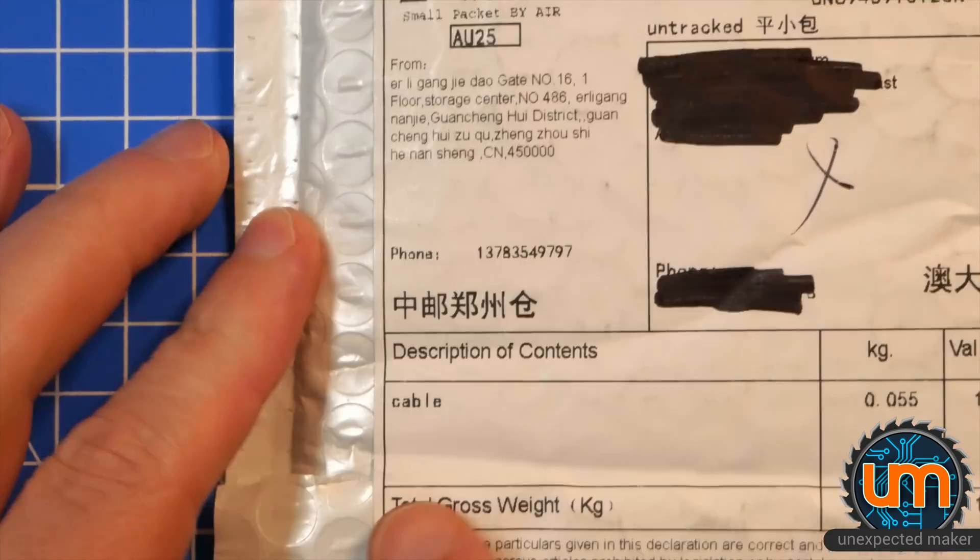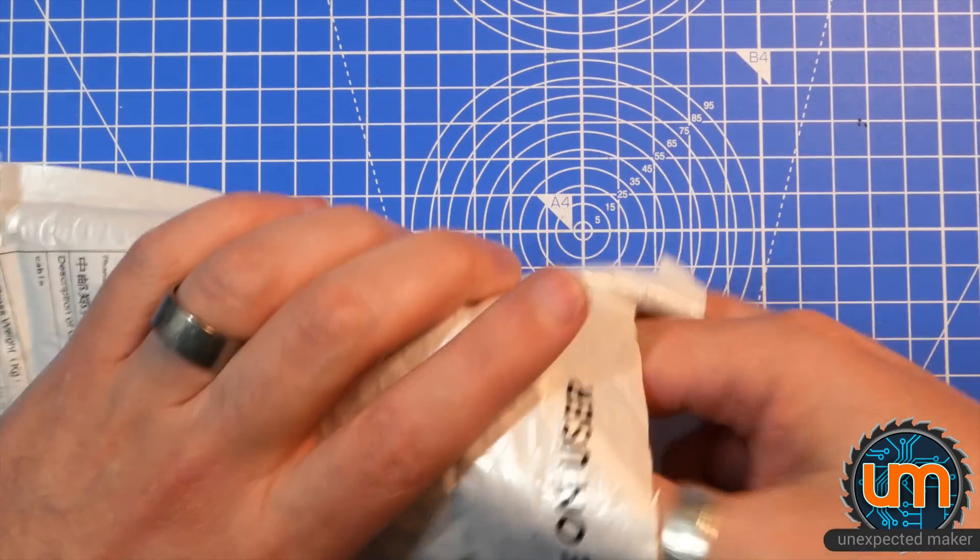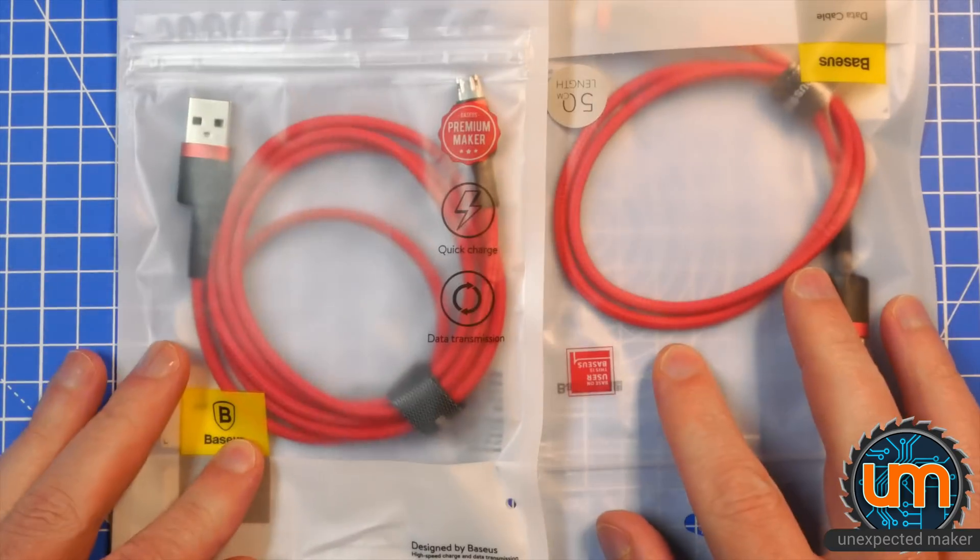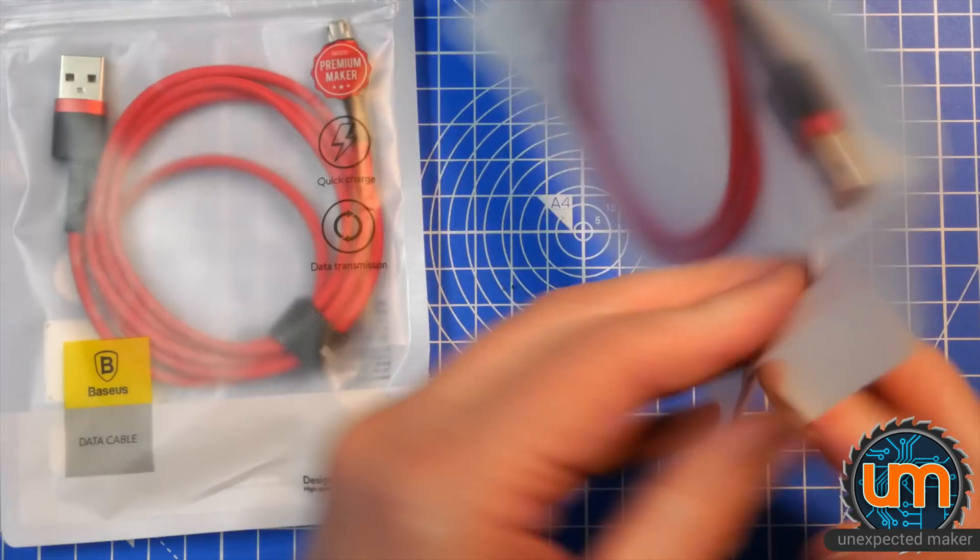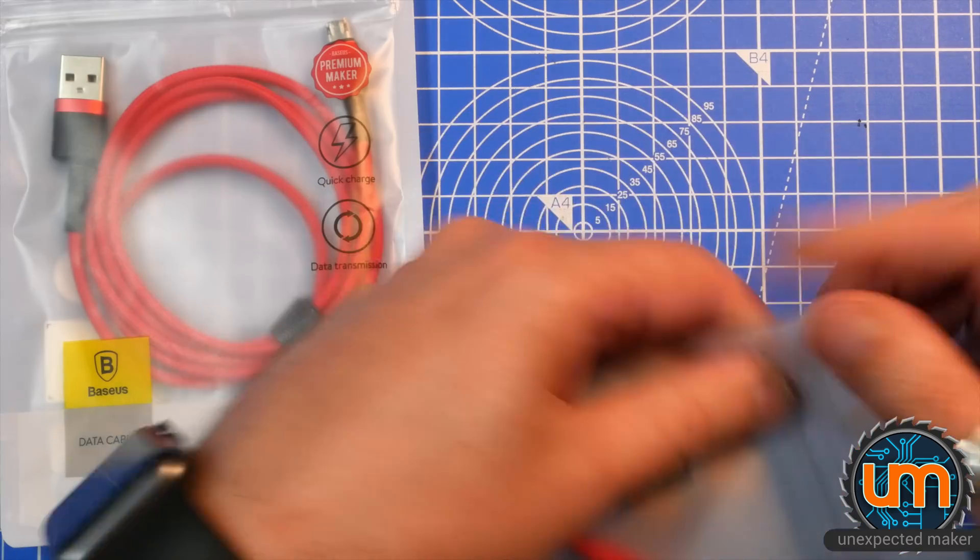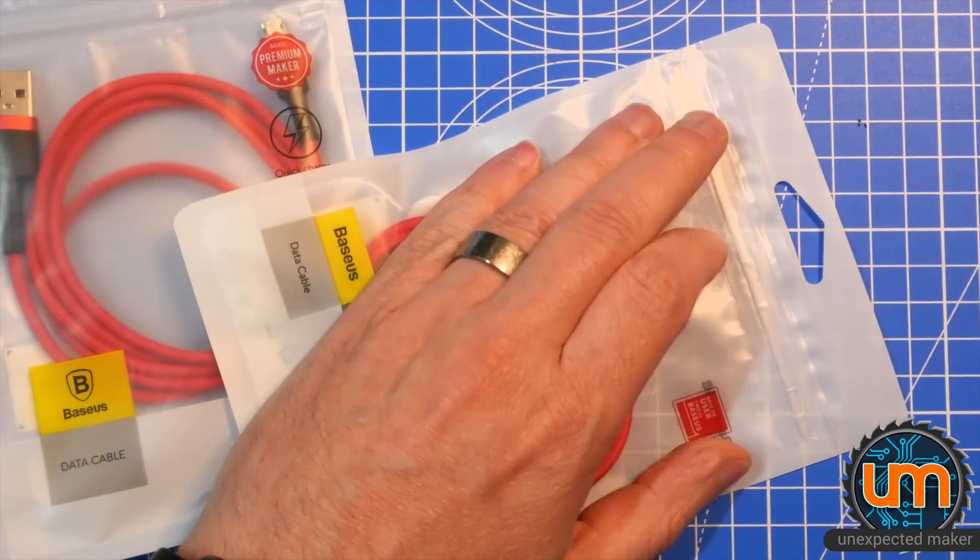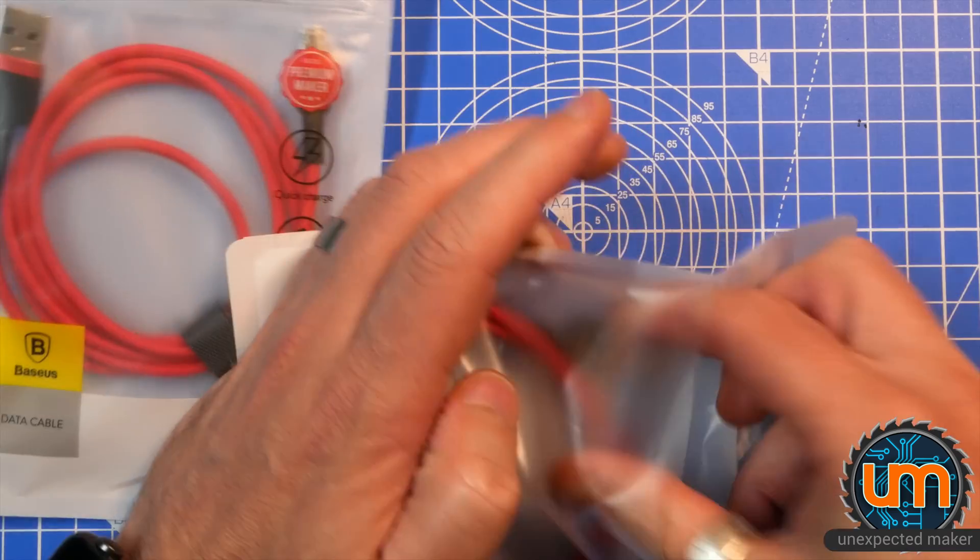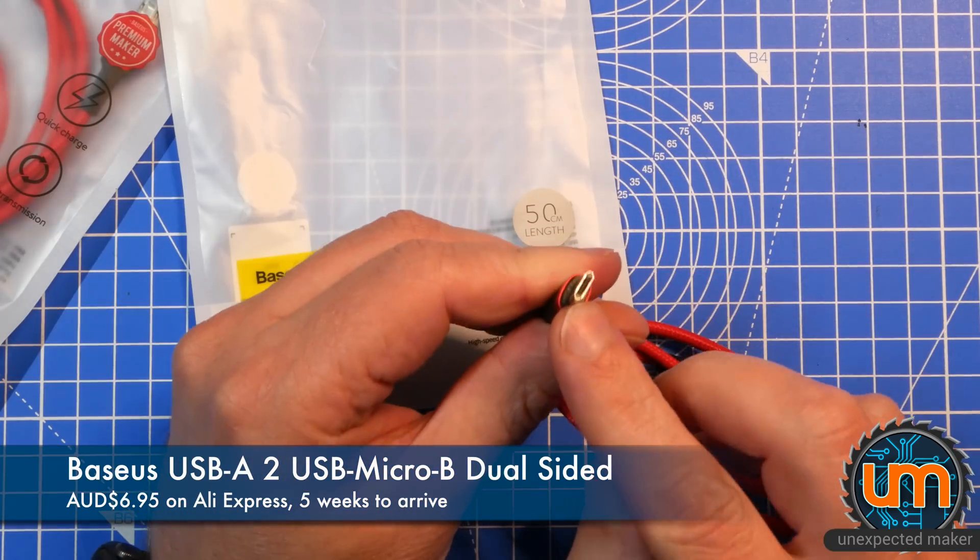And next we have cables. Be careful where I cut this. I think I know what these are. I hope these are what I think they are. Excellent. They are. So these are USB cables A to micro B. It's a resealable bag but who cares. I don't even need it to be resealable. These cables have the double sided USB micro B.